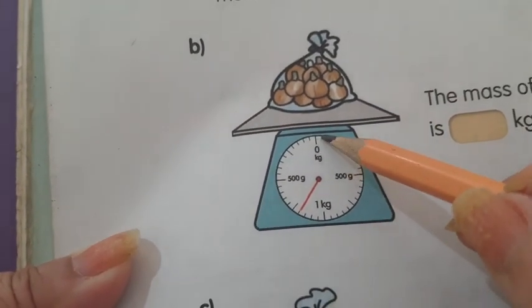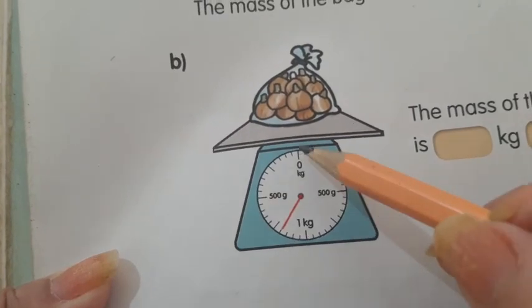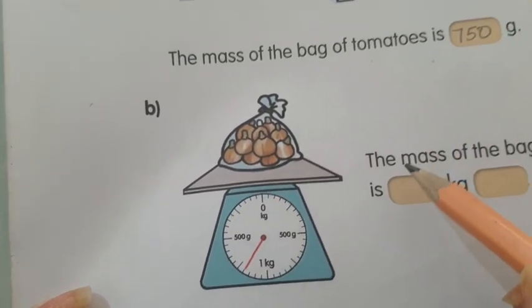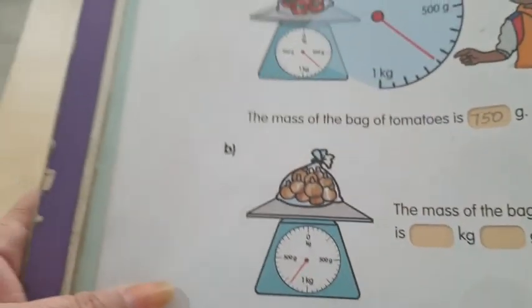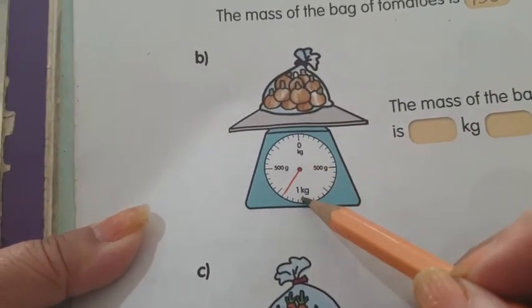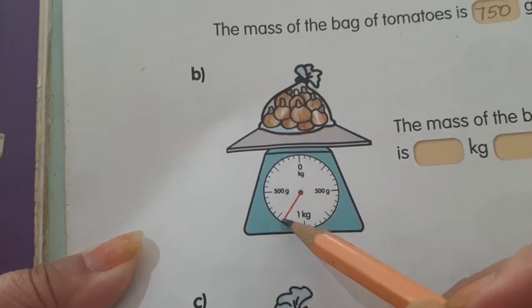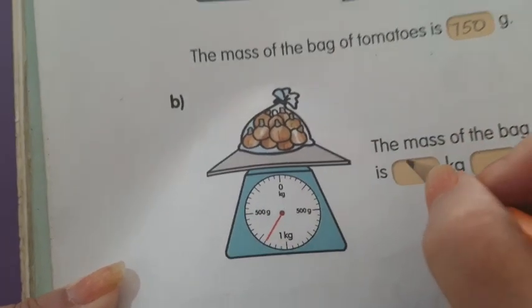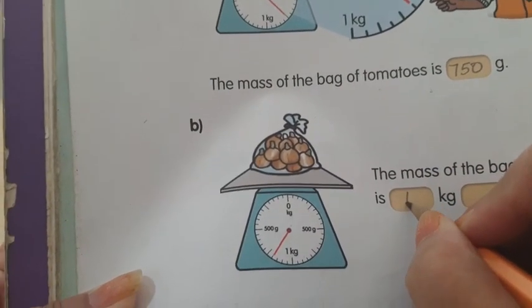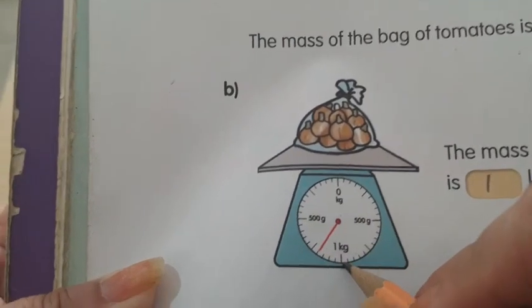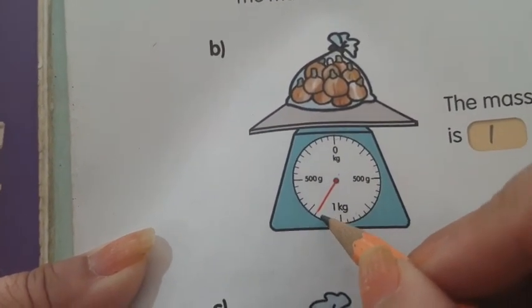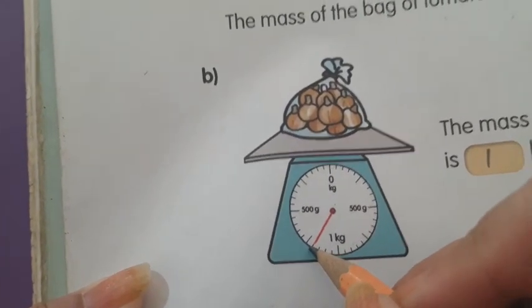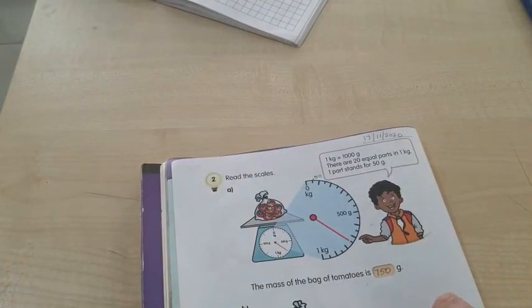The mass of the bag of onions. Now the pointer is past 1 kilogram. This is 1 kilogram, it is past it, it's over it. So the bag of onions is 1 kilogram and let's count how many grams.